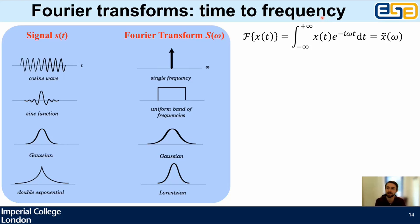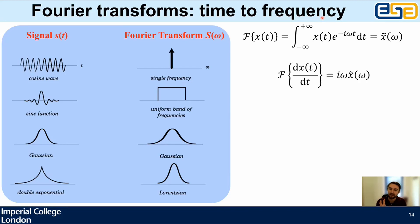Key result: the Fourier transform of the first time derivative of x is iω times x̃. Something quite profound is happening — calculus has turned into multiplication by a coefficient. Differentiation in the Fourier domain becomes: multiply your transformed function by iω, where ω is the frequency and i is the square root of minus one, the complex unit.